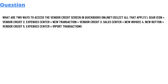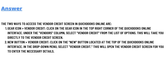Option one: gear icon, then vendor credit. Option two: expense center, then new transaction, then vendor credit. Option three: sales center, then new invoice. Option four: new button, then vendor credit. Option five: expense center and import transaction. The answer to the question is the two ways to access the vendor credit screen in QuickBooks Online are...